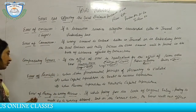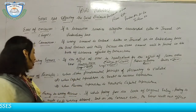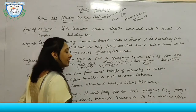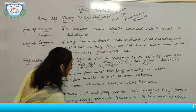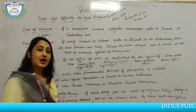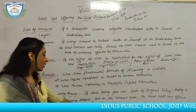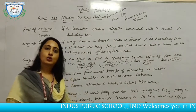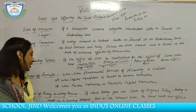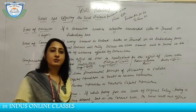The next error is error of posting in the wrong account but on the correct side. For example, we purchased goods from Ram and should have credited Ram's account, but instead credited Shyam's account. Since the correct side (credit) was used, the total will tally. This is an error that is not disclosed by the trial balance.